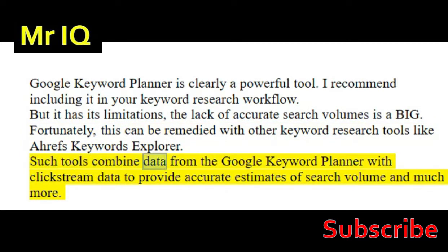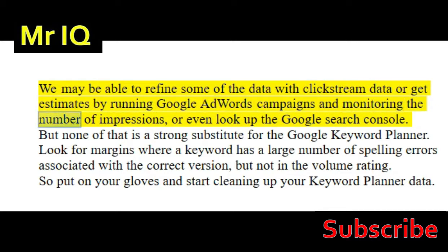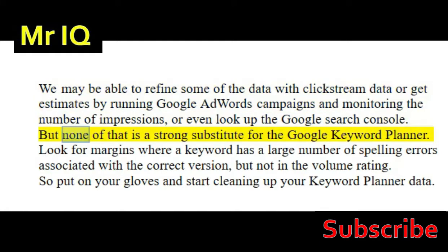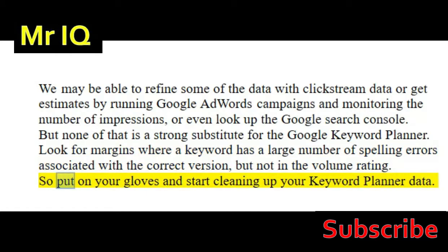Such tools combine data from the Google Keyword Planner with Clickstream data to provide accurate estimates of search volume and much more. We may be able to refine some of the data with Clickstream data, or get estimates by running Google AdWords campaigns and monitoring the number of impressions, or even look up the Google Search Console. But none of that is a strong substitute for the Google Keyword Planner. Look for margins where a keyword has a large number of spelling errors associated with the correct version but not in the volume rating. So start cleaning up your Keyword Planner data.